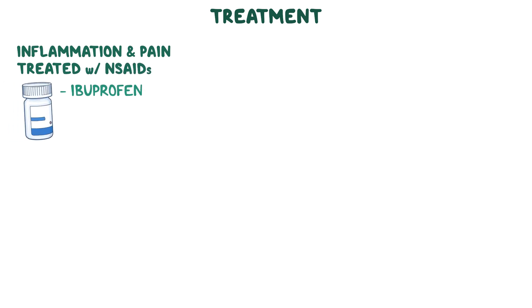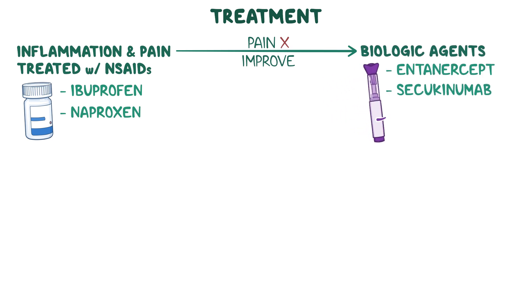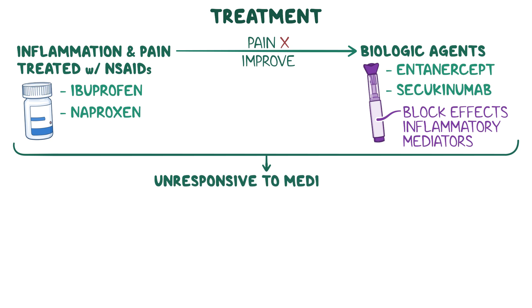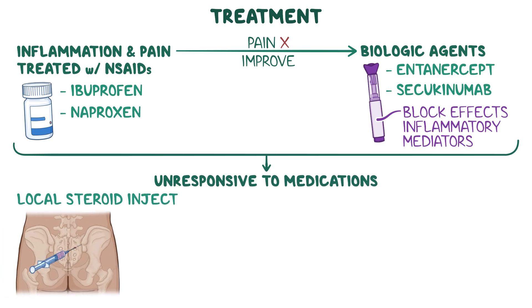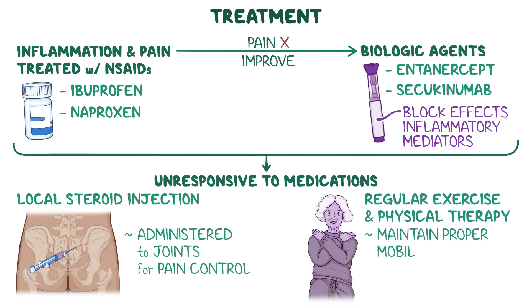Inflammation and pain from AS can be treated with non-steroidal anti-inflammatory drugs like ibuprofen or naproxen. If pain doesn't improve after a few weeks, individuals may be treated with biologic agents like etanercept or secukinumab, which block the effects of specific inflammatory mediators. For individuals unresponsive to these medications, local steroid injections may be administered in the affected joints for pain control. Regular exercise and physical therapy are also important to help maintain proper mobility and posture.